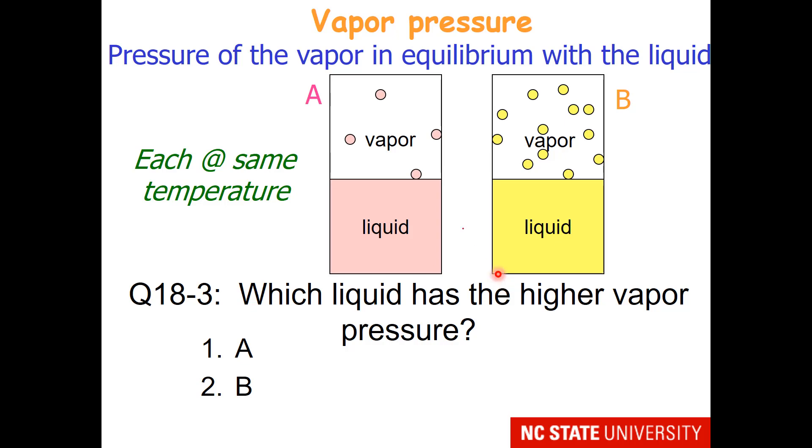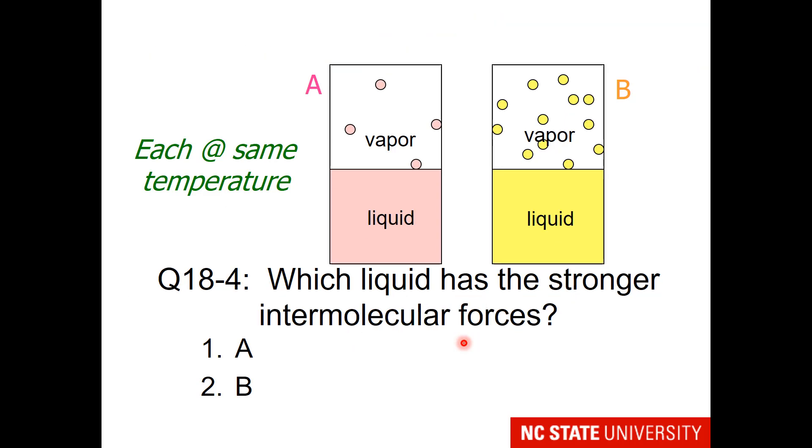I have two mystery liquids here. Liquid A, which has a few gas molecules above it, and liquid B, which has more gas molecules above it. So the hopefully easy question is, which liquid has the higher vapor pressure? The next question is a little bit more challenging. Which liquid has the stronger intermolecular forces?